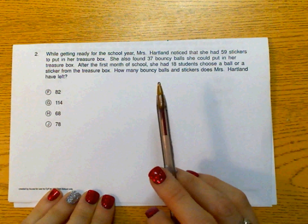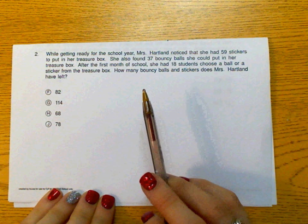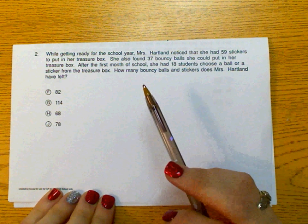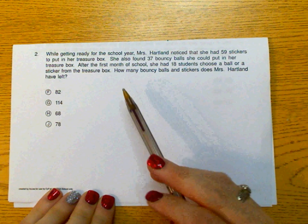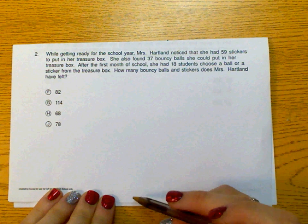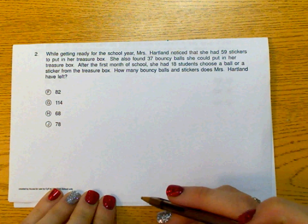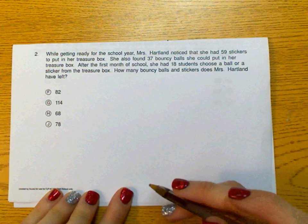While getting ready for the school year, Mrs. Hartland noticed that she had 59 stickers to put in her treasure box. She also found 37 bouncy balls she could put in her treasure box. After the first month of school, she had 18 students choose a ball or a sticker from the treasure box. How many bouncy balls and stickers does Mrs. Hartland have left?